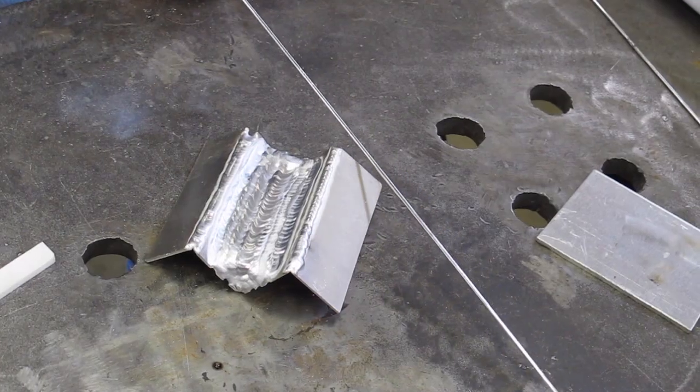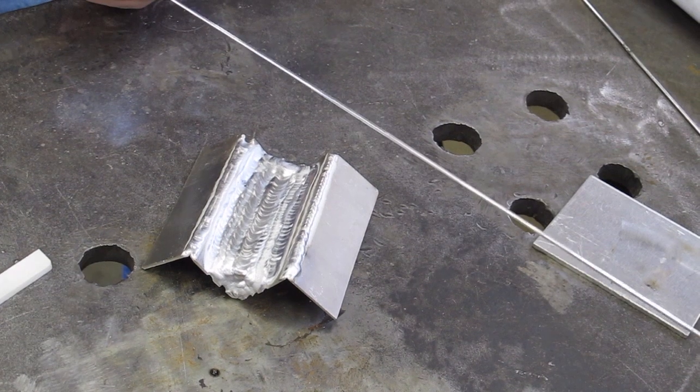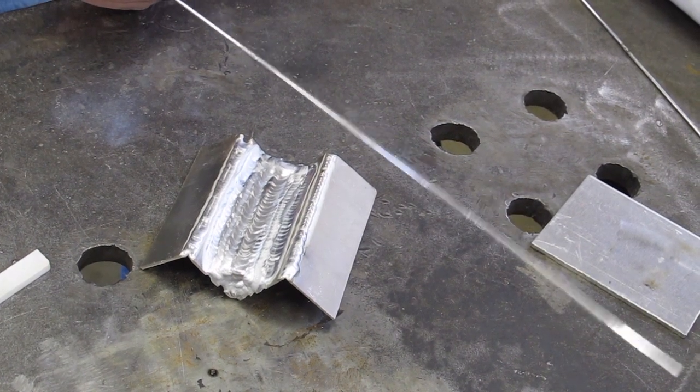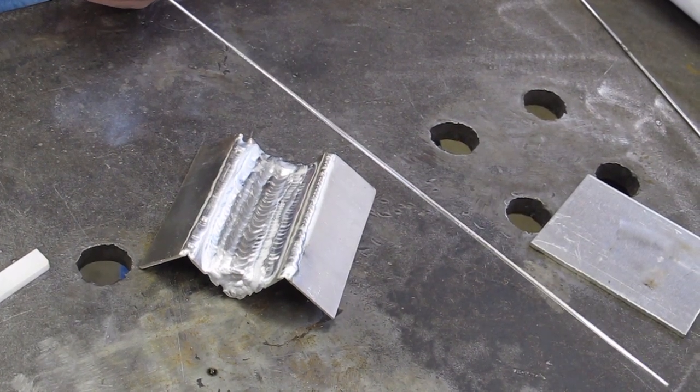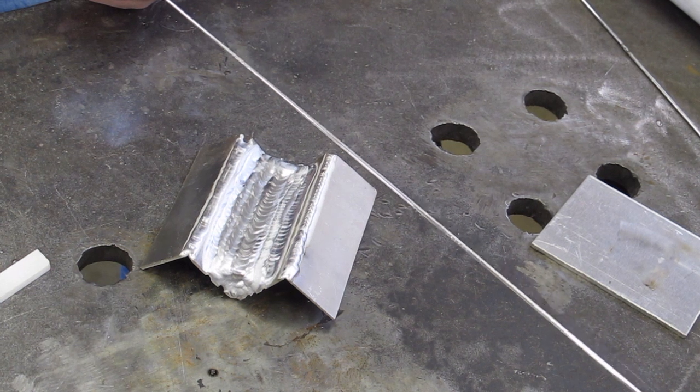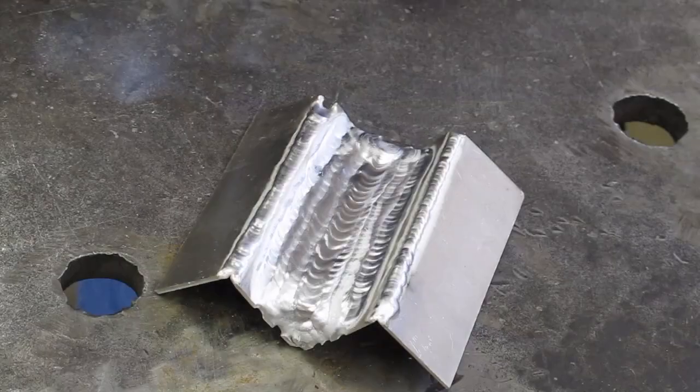Okay. So in order to weld today, the last thing on the list that we'll need is filler material. And this particular filler wire is a 3/32nd 4043 aluminum.